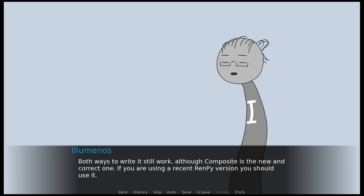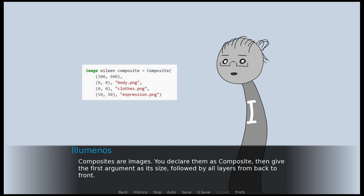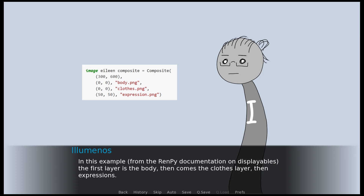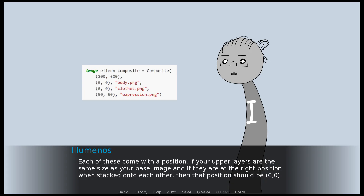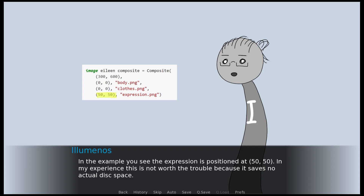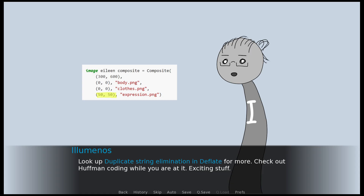If you are using a recent RenPy version, you should use it. Composites are images. You declare them as composite, then give the first argument as its size, followed by all layers from back to front. The first layer is the body, then comes the clothes layer, then expressions. Each of these come with a position. If your upper layers are the same size as your base image and at the right position, that position should be 0,0. Look up duplicate string elimination in deflate for more, and check out Huffman coding while you are at it. Exciting stuff.